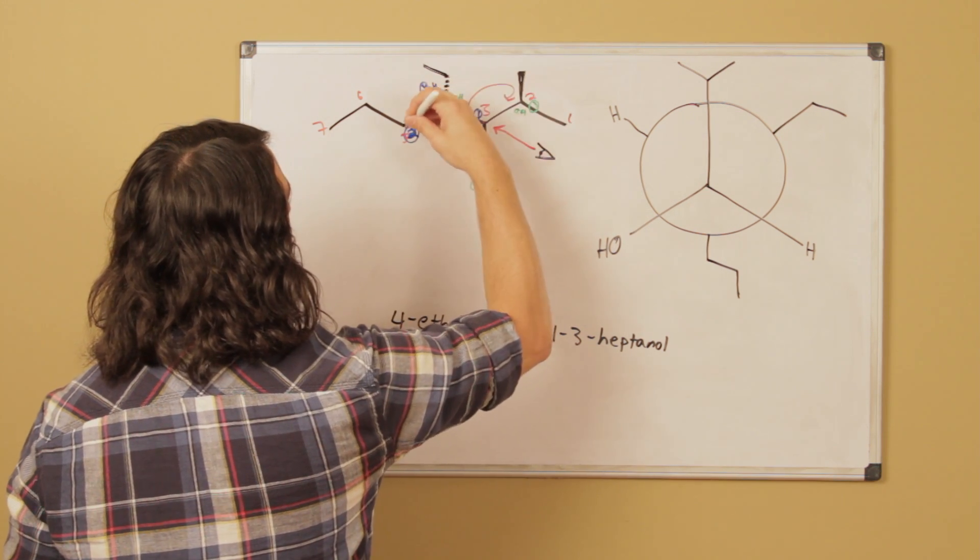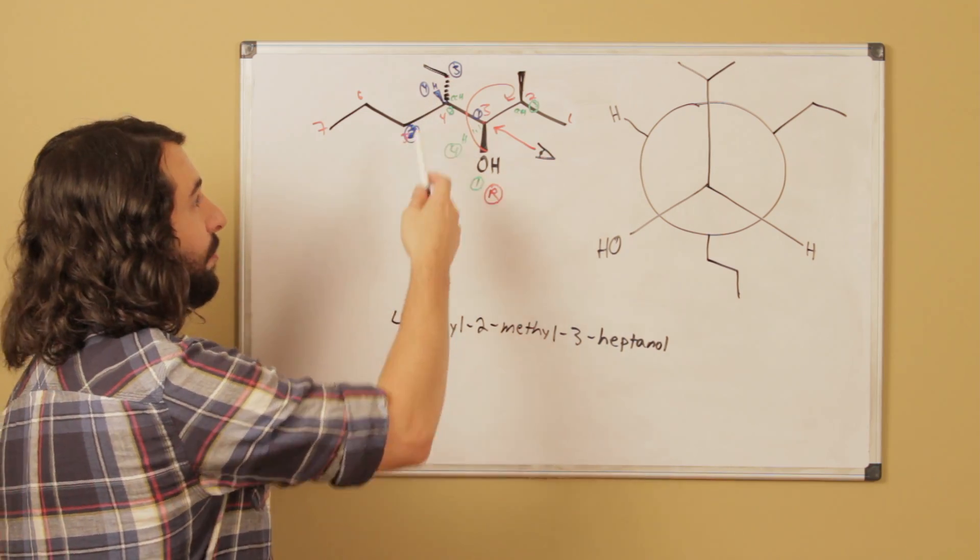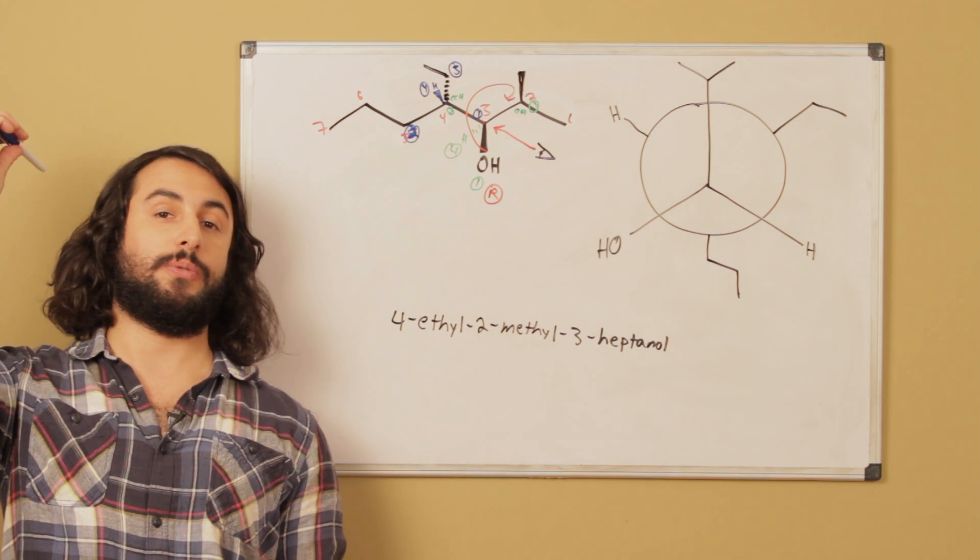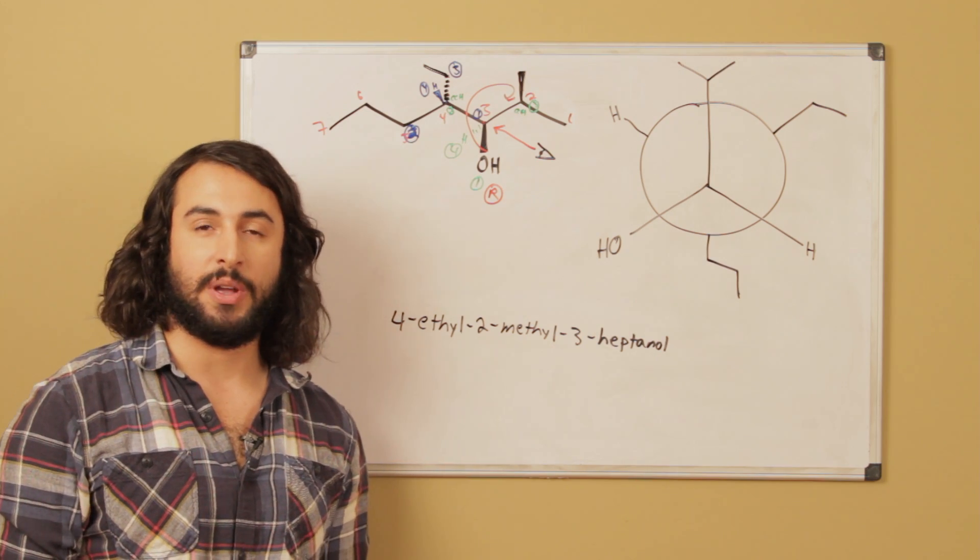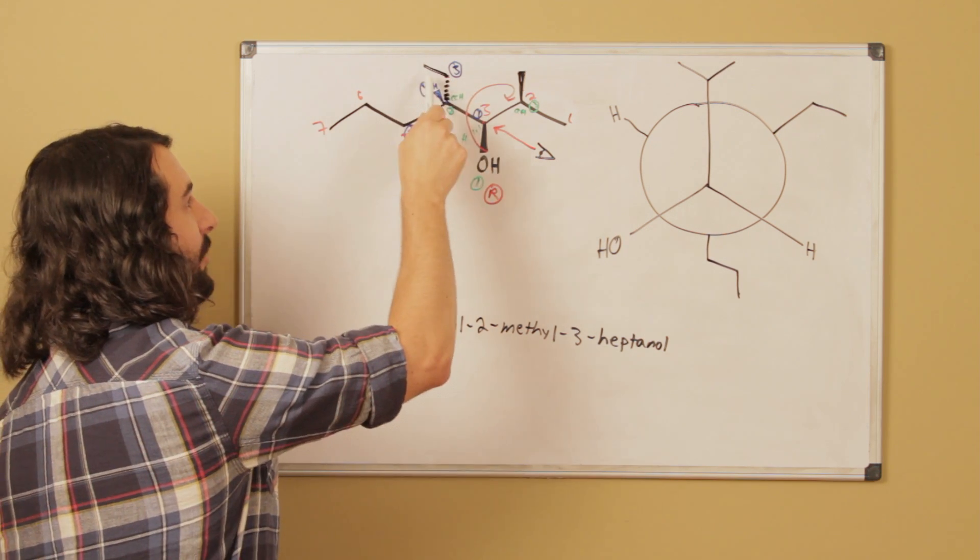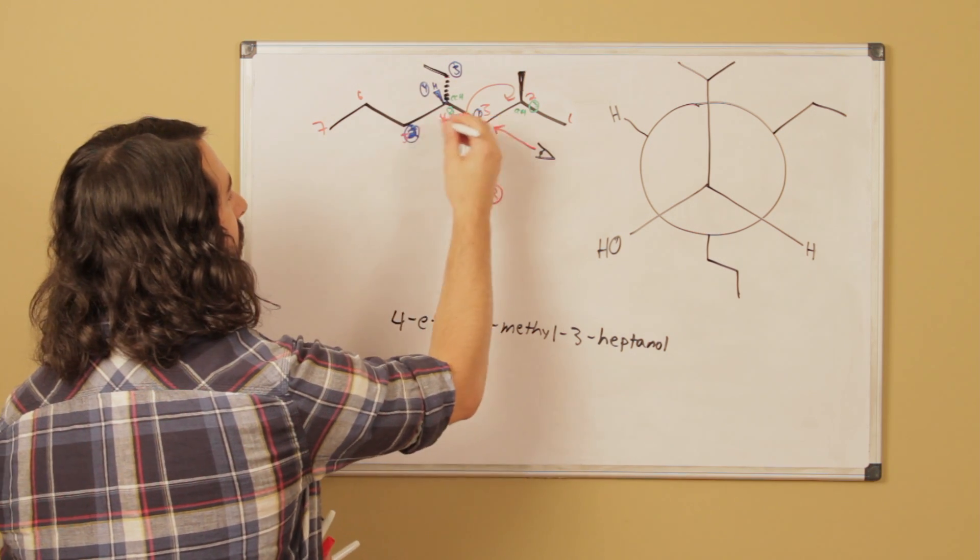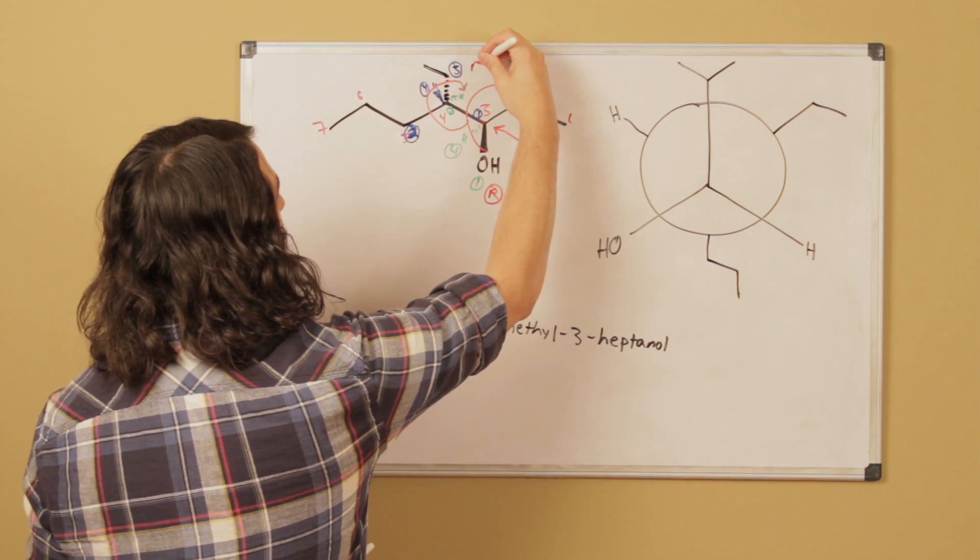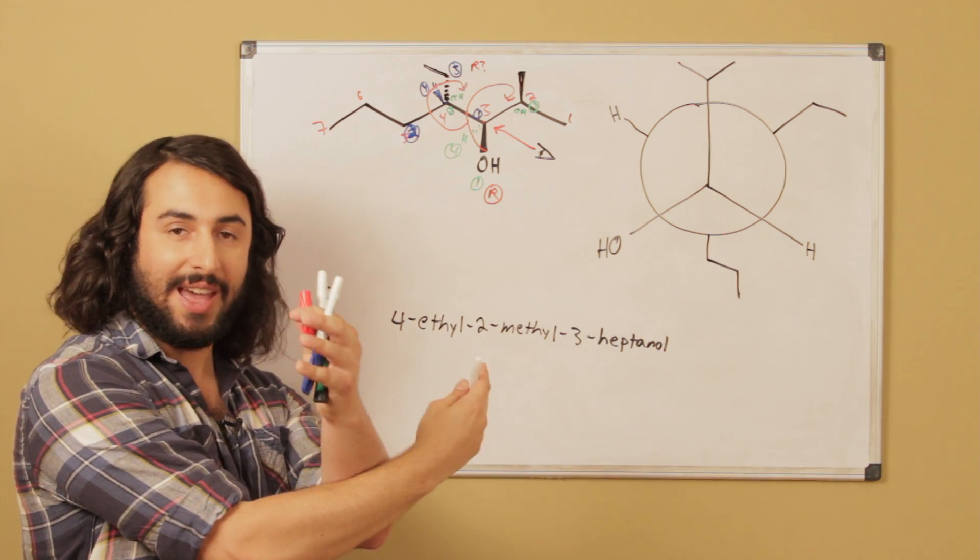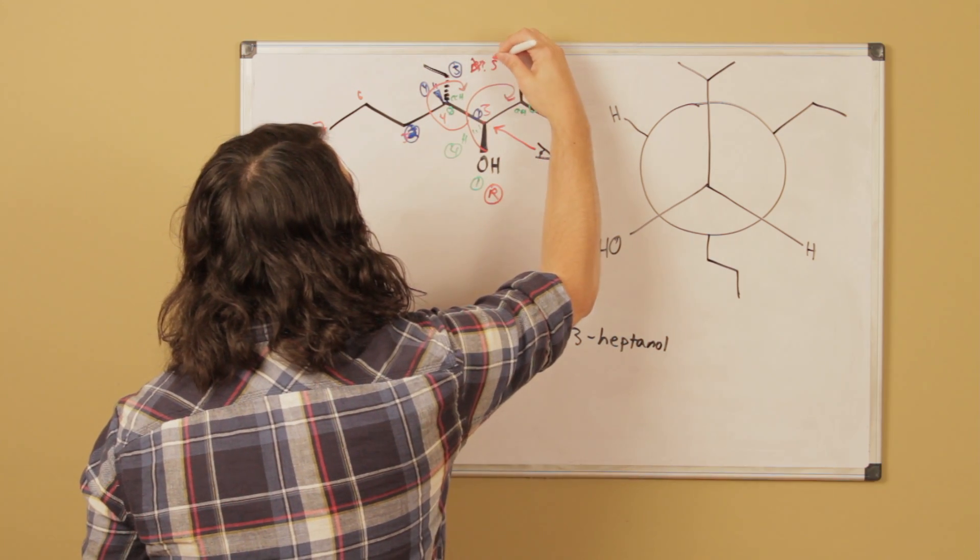Now, here we are in a situation where the lowest priority group is actually towards us. And so what we need to be able to do is one of two things. Either view the molecule from the other side, which many students have difficulty with. So instead, let's do the trick that we mentioned. Let's pretend that the hydrogen is on the dash bond and the ethyl is on the wedge bond. So if the ethyl was on the wedge bond, we would simply go 1, 2, 3 like that, and we would say R. But because we inverted the stereochemistry to be able to view it that way, we must then invert our answer to reflect the actual molecule. So we will call that S.